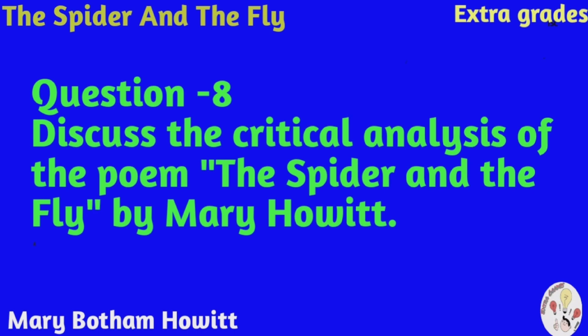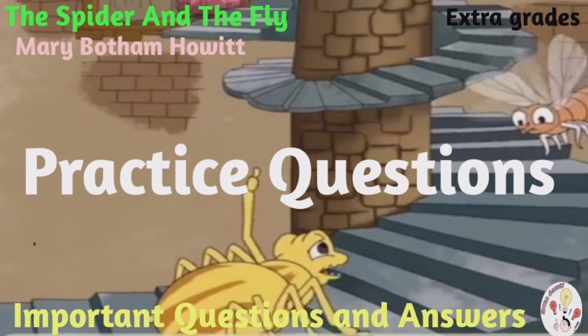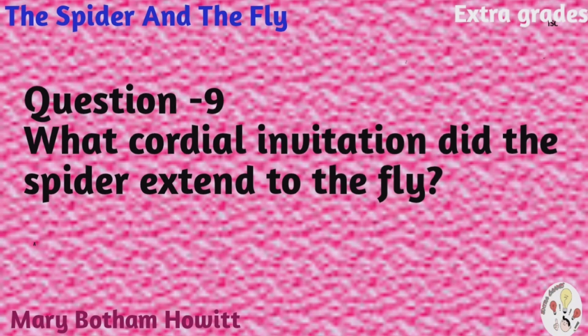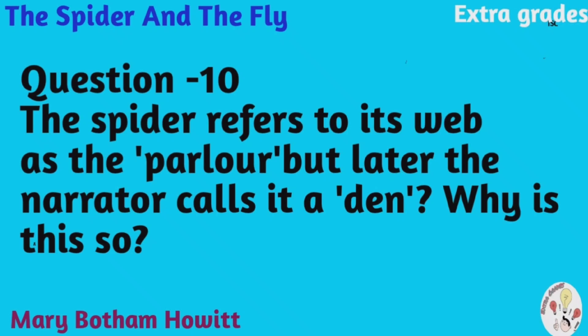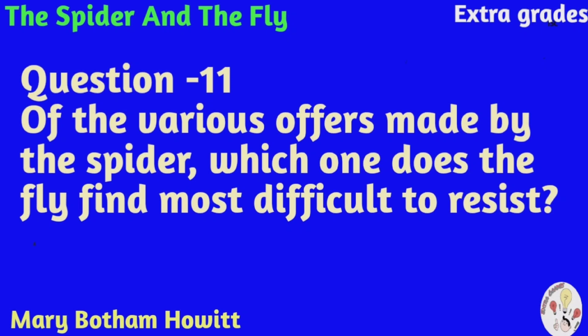So children, I have given you solutions to eight questions. Now I am giving you some practice questions which you should practice by writing the answers. Question nine: what cordial invitation did the spider extend to the fly? Question ten: the spider refers to its web as the 'parlor' but later the narrator calls it a 'den' — why is this so? Question eleven: of the various offers made by the spider, which one does the fly find most difficult to resist?